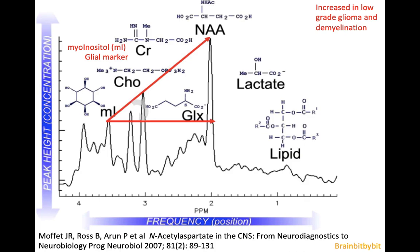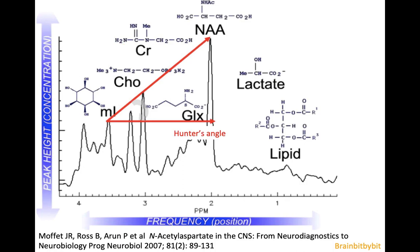At short echo time you can also see an MI peak, and if you look at the molecule it resembles glucose — this is a glial marker, so it is increased in low-grade glioma and in demyelination. If you eyeball the spectroscopy at short echo time, there is a line between MI, creatine, and NAA that should be about 45 degrees. This is called Hunter's angle and is a good rule of thumb to quickly assess whether metabolite concentrations are normal.